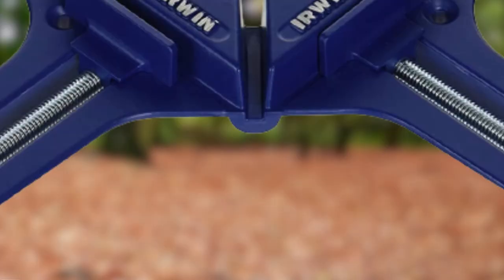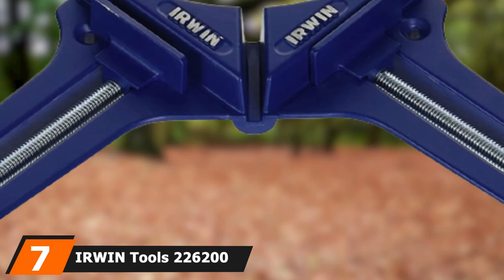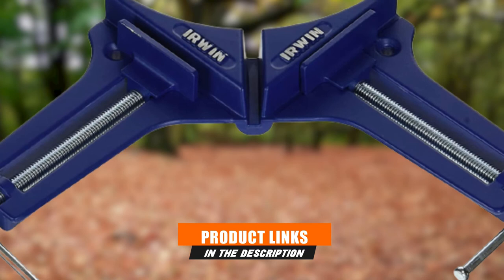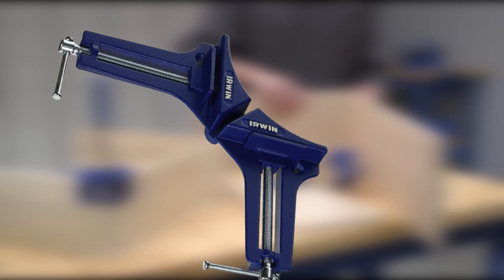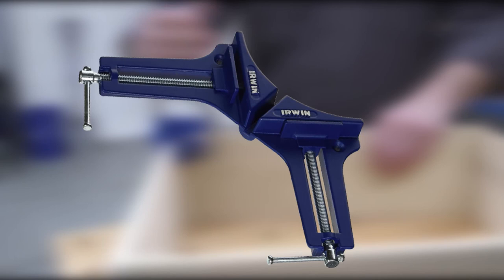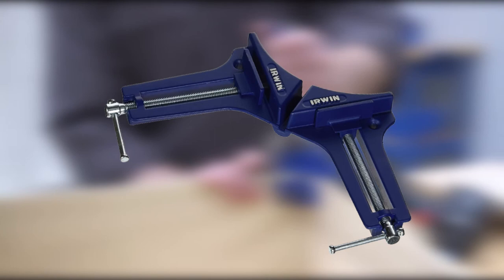Moving on to number seven with Erwin Tools 226200 Quick Grip Corner Clamp. Made of composite material, the Erwin Corner Clamp is designed for light duty work more in the wheelhouse of picture frames, molding, and other smaller projects. It consists of twin steel screws that push the clamps from 90-degree angles instead of the single press adjustable jaw mechanism.